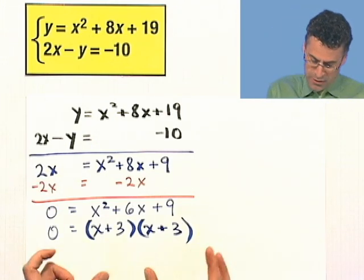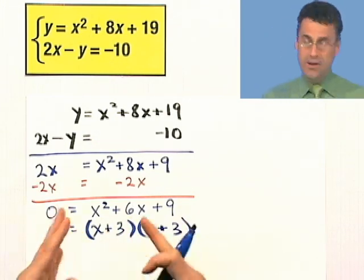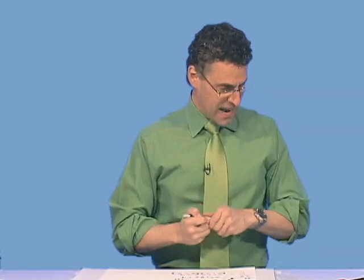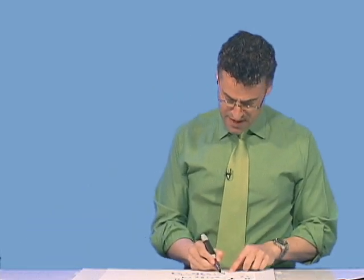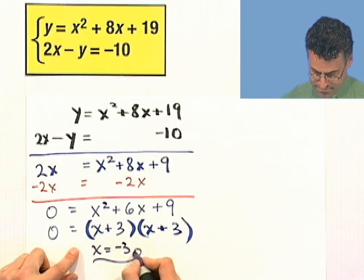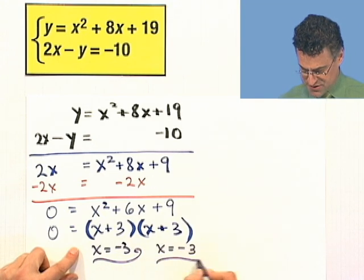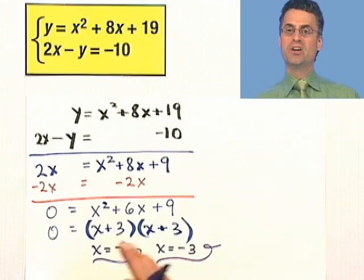So you know the fundamental rule about when you have a product of things equaling 0. Either one is 0, or the other is 0. In this case, notice they're the exact same equation. The first one is 0 when x equals negative 3, and the second one is 0 when x equals negative 3. So notice that I actually have the same solution twice. This is one of those examples where the line just grazes the parabola. There's just one point of intersection. They just romantically kiss.